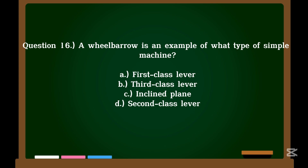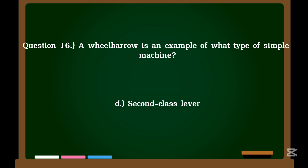Question 16. A wheelbarrow is an example of what type of simple machine? A. First class lever. B. Third class lever. C. Inclined plane. D. Second class lever. Correct answer: D. Second class lever.